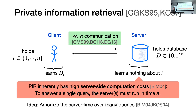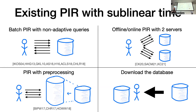Fortunately, prior work has shown that we can hope to amortize this linear server time over many queries. In other words, in the many-query setting, we can build PIR schemes where the amortized per-query server work is sublinear in the database size N. The first such approach is what we call batch PIR. In this setting, our client makes a batch of queries and sends them all at once to the server. Our server answers all these queries together in time linear in the database size. So if we amortize over enough queries, the per-query server time is sublinear.